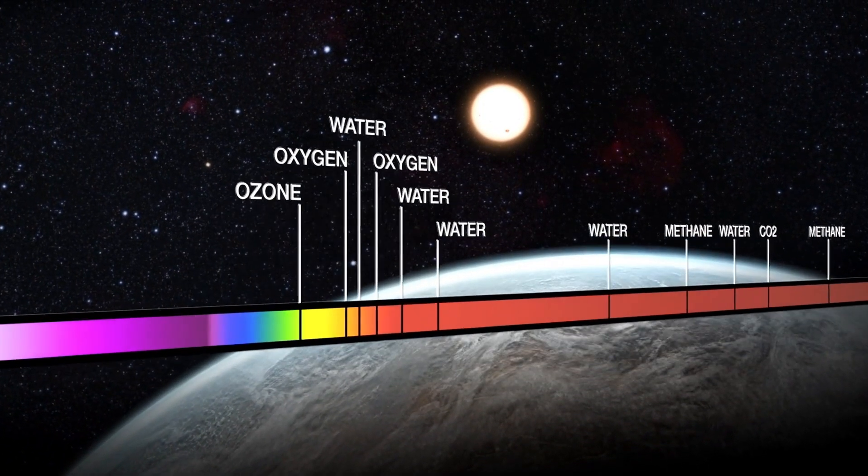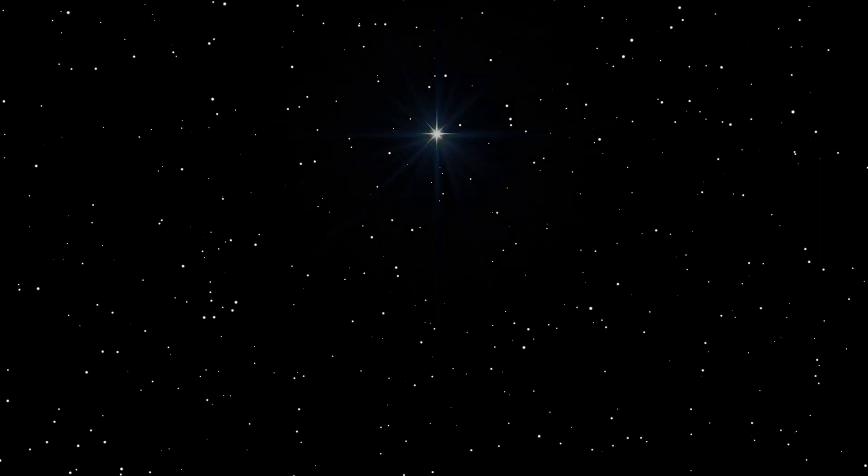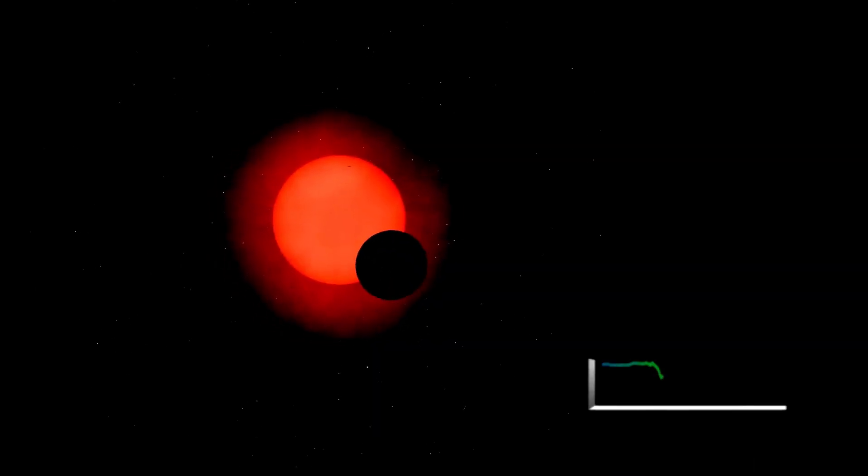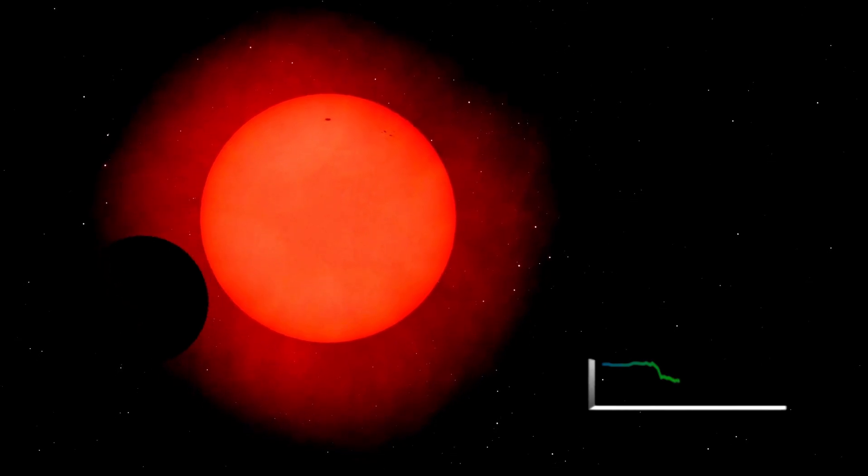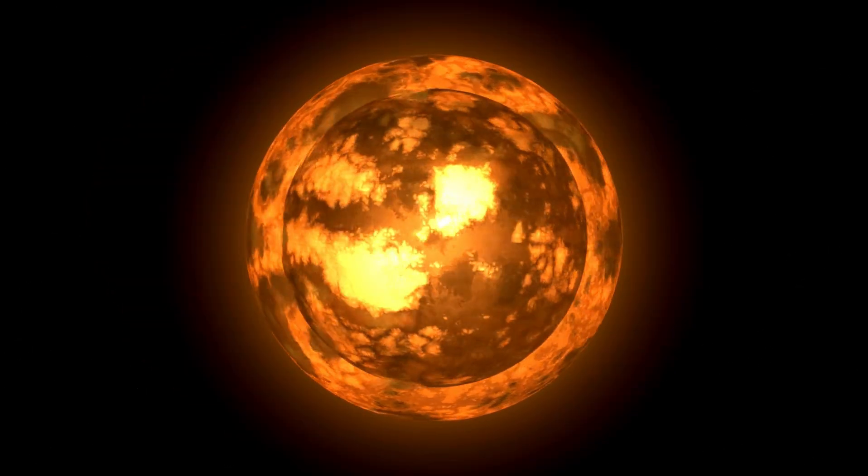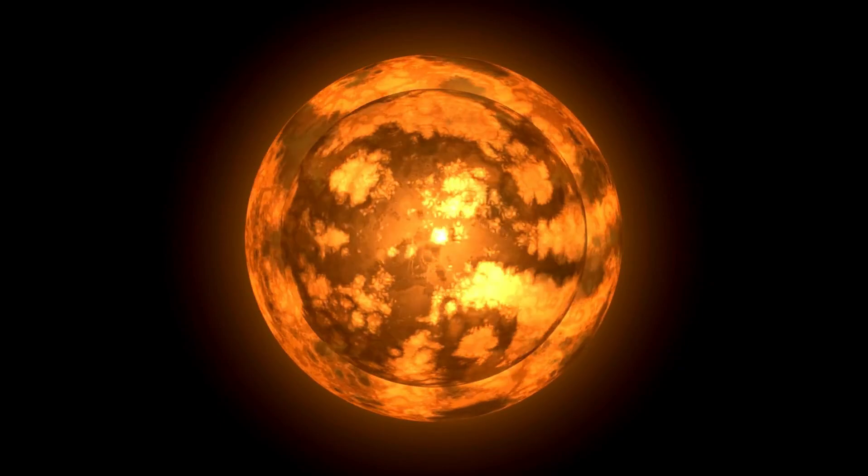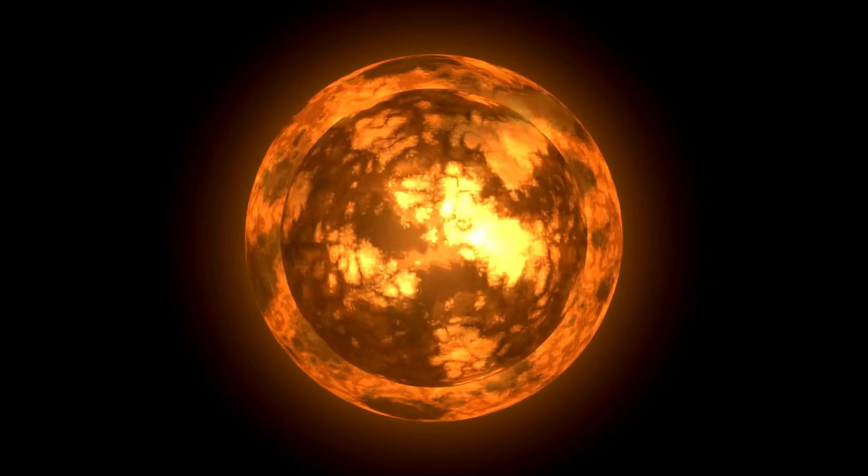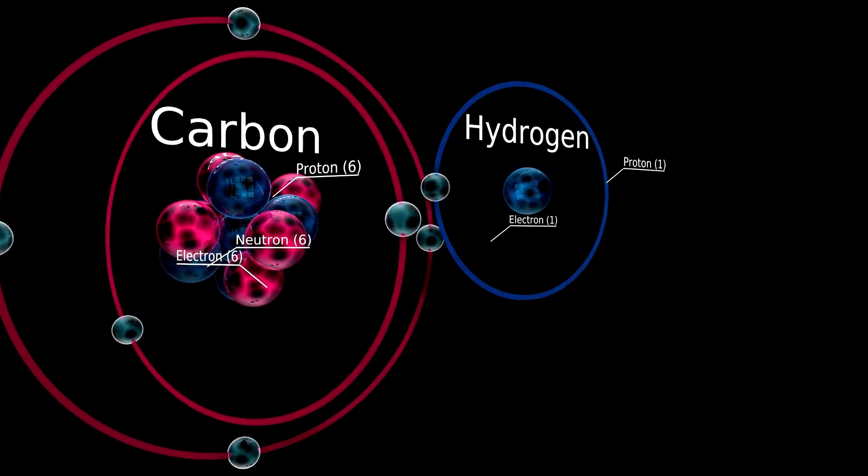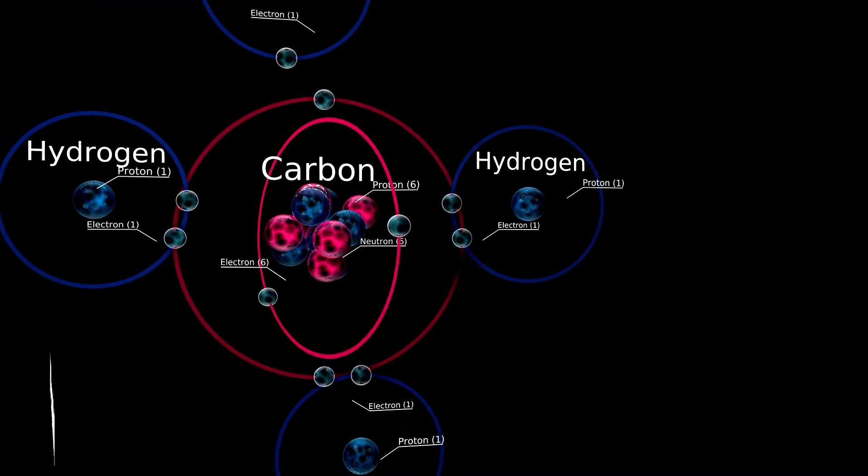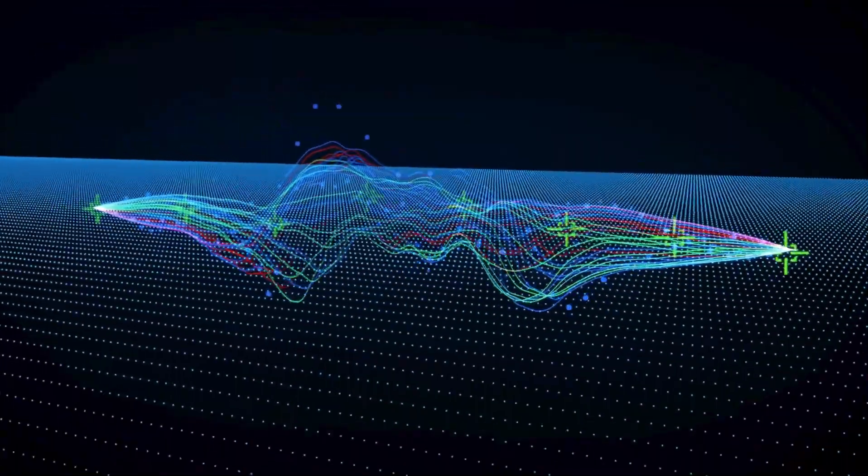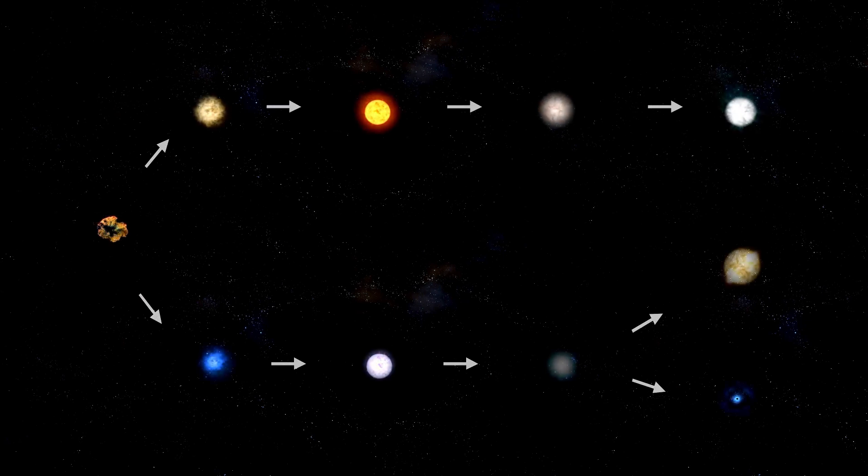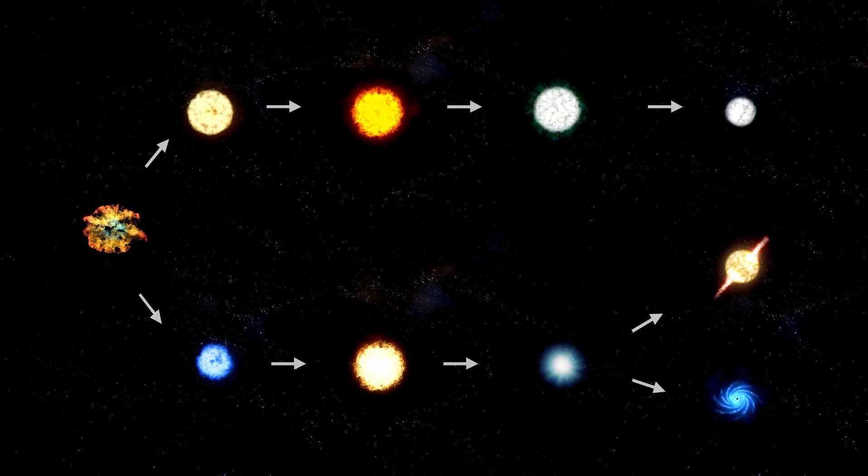Betelgeuse's variability is particularly pronounced due to its immense size and advanced stage of evolution. As a red supergiant, it has already exhausted the stable hydrogen burning phase that defines the lives of smaller, less massive stars. Its core is now dominated by helium, with fusion occurring in surrounding shells of hydrogen and eventually heavier elements. The fusion of helium into heavier elements such as carbon and oxygen releases less energy than hydrogen fusion, making radiation pressure more erratic and less effective at countering gravity. This instability contributes to the pronounced pulsations observed in Betelgeuse as the balance between gravity and radiation pressure becomes increasingly fragile.